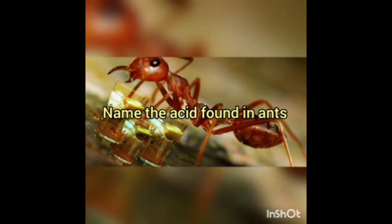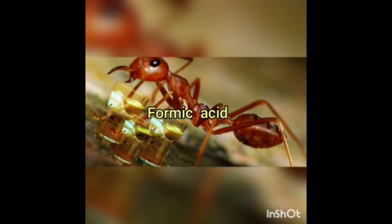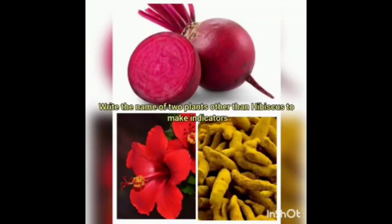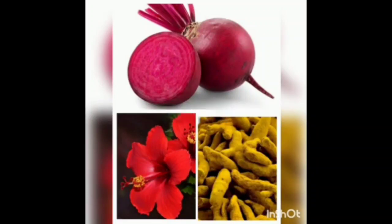Name the acid found in ants: formic acid. Write the name of two plants other than hibiscus to make indicators: turmeric and beetroot.